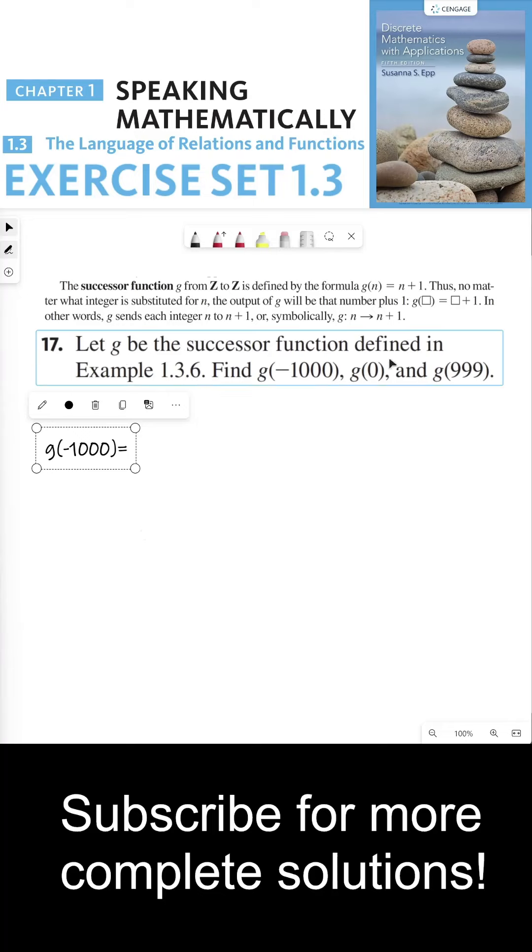So this says, let g be the successor function defined in example 1.3.6, which I wrote here above. The successor function g from the integers to the integers is defined by the formula g(n) = n + 1. Thus, no matter what integer is substituted for n, the output of g will be the number plus 1.